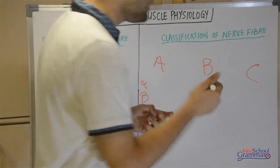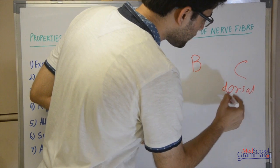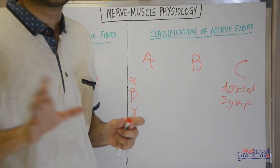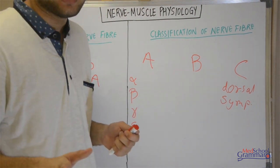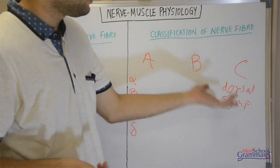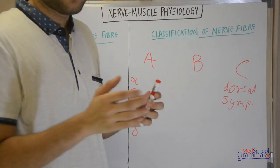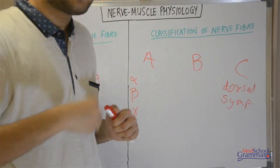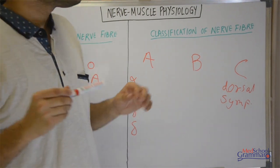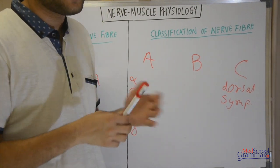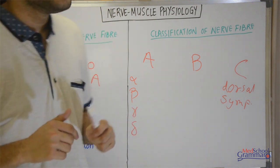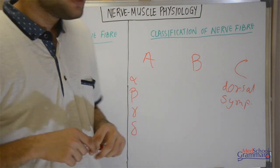In order, the classification is: A-alpha, A-beta, A-gamma, A-delta, B, and C. C is of two types: dorsal and sympathetic. The classification is based on diameter — A-alpha has the maximum diameter of approximately 12 to 20 micrometers, while C sympathetic is the smallest. Conduction velocity is also maximum in A-alpha and least in C type.